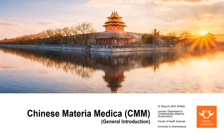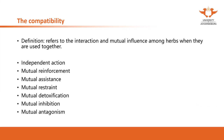Good day everyone. In this video we are going to talk about the compatibility of herbal medicine. Compatibility refers to the interaction and mutual influence when herbs are used together. It doesn't mean one herb — it means the relationship when you use different herbs together, because different herbs when used together produce different interactions. The compatibility can be divided into seven categories.